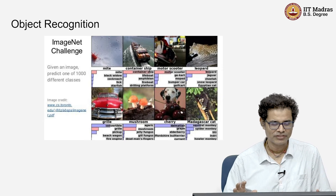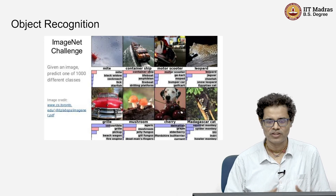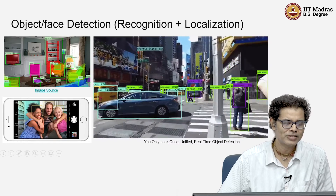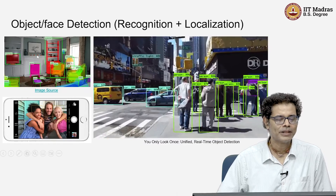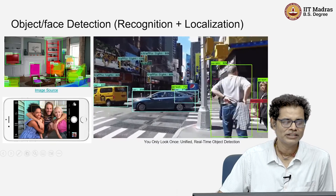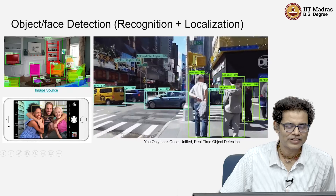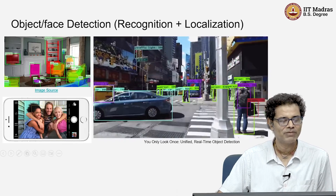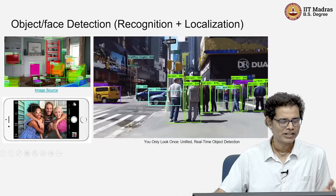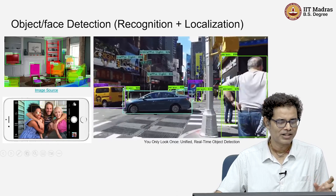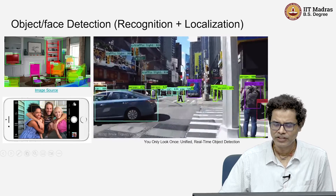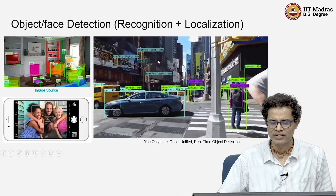In general, recognition means there is one dominant object in the image and you want to say what that object is. In general, it will not be just one object but multiple objects. For example, in an indoor scene there are many objects: plate, sofa, pillow, and so on. What we want is to do object detection, which means we want to localize where each object is and also name them. This is more challenging than just recognizing one object in the whole image. It is also very useful — for example, our cameras have face detection built in, and in traffic scenes it detects pedestrians, cars, and all kinds of objects.